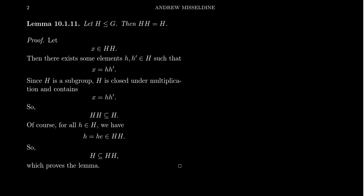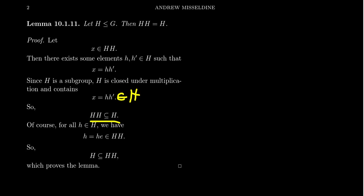As these are sets, we want to show two sets are equal to each other by showing they are subsets of each other. We're first going to prove that H times H is a subset of H. Take an arbitrary element X of HH. If you belong to HH, that means there are elements h and h′ such that X factors as hh′. But H is a subgroup, so H is closed under multiplication. If I take a product of two things in H, I get something in H. So X belongs to H, and that proves the first direction.